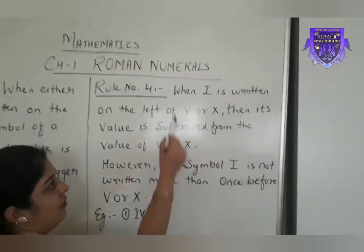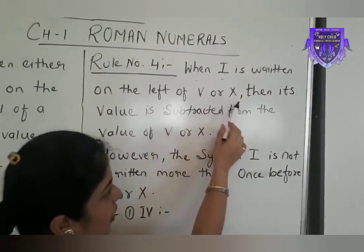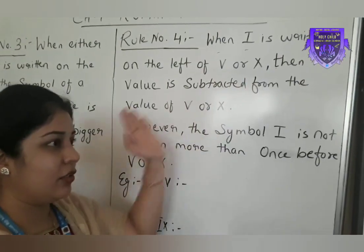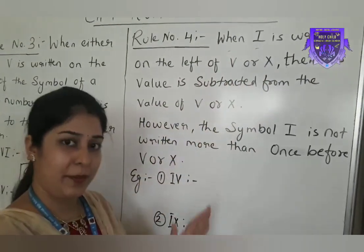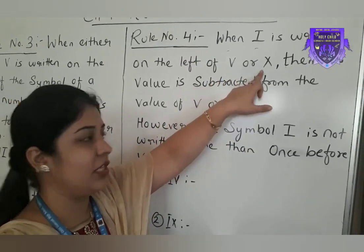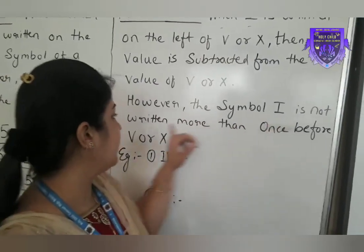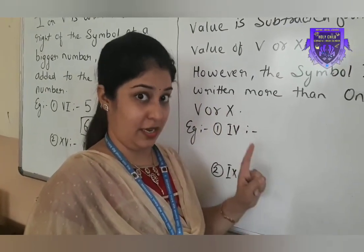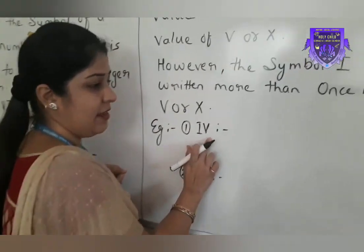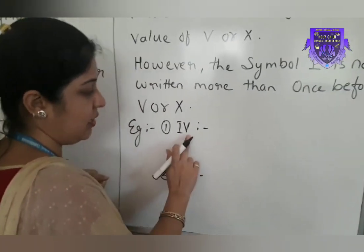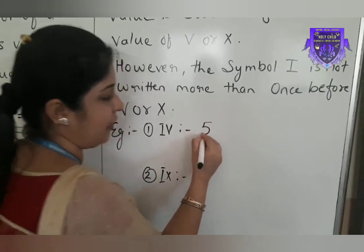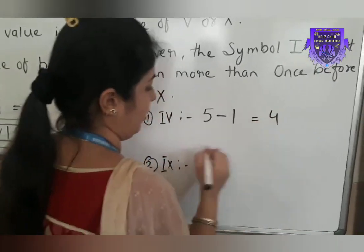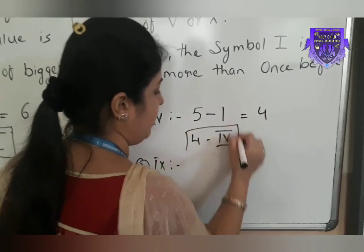Rule number 4: when I is written on the left side of V or X, then its value is subtracted from the value of V or X. If we write I on the left side of these two values, we have to subtract 1 from the value of those numbers. However, the symbol I is not written more than once before — when writing on the left side, only once the symbol I is written. Let's see the example. I then V: value of I is 1, value of V is 5. 5 is the bigger number. First we write 5, then we subtract 1 because it is written on the left side. 5 minus 1 gives us 4. In this way, 4 is written in Roman numerals.